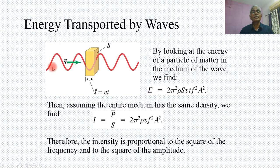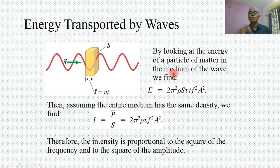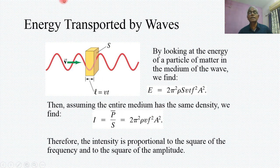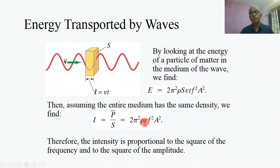Similarly, for energy transported by a transverse wave, the energy of a particle of matter in the medium equals 2π²ρsvt · f² · A², where f is frequency and A is amplitude. The term v·t represents the distance travelled by the wave in the medium. Assuming the medium has uniform density, intensity I equals power divided by area S. Since v and ρ are constant, intensity is proportional to the square of frequency and square of amplitude.